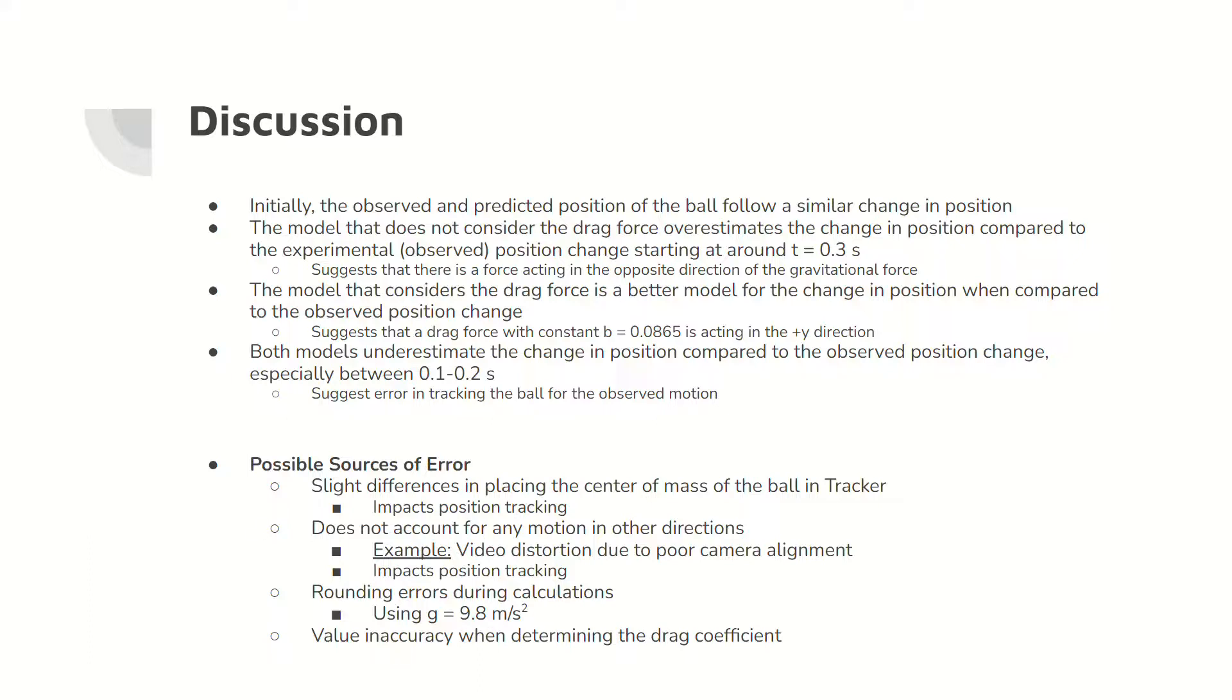Sources of error include differences in measuring the center of the ball and not accounting for motion in other directions, which would impact the ball's position measurements. Rounding errors in calculations and in the code are also considered. There is also a possible error when determining the drag coefficient because it was determined through trial and error.